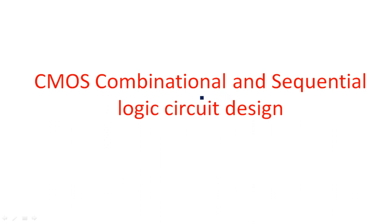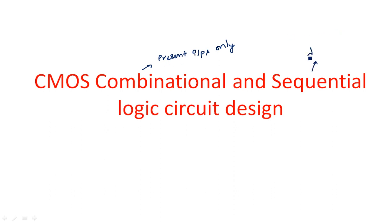What do you mean by combinational logic circuit and sequential logic circuit? The basic difference is that a combinational logic circuit depends on present inputs only. Any logical circuit that depends only on the present logic inputs — like 1, 1, 0, 0 — is known as a combinational logic circuit.